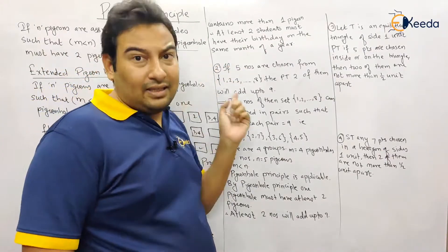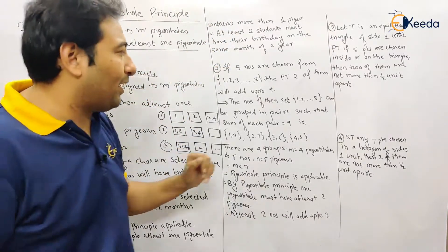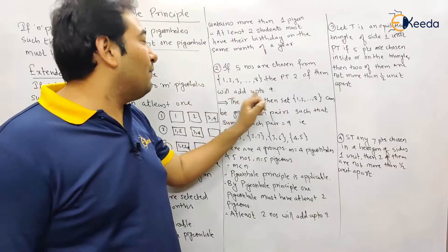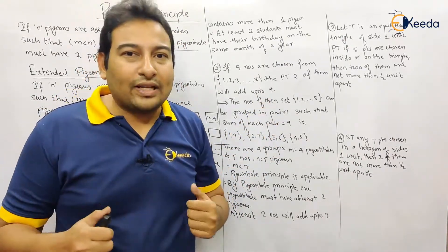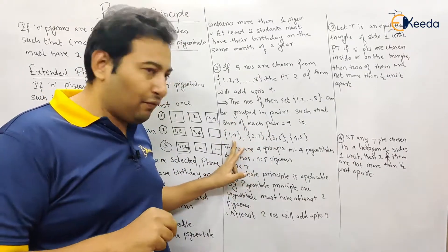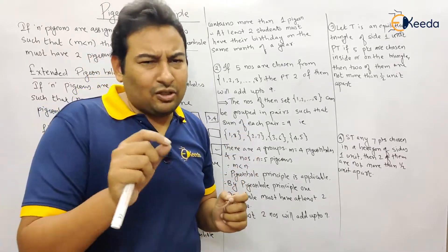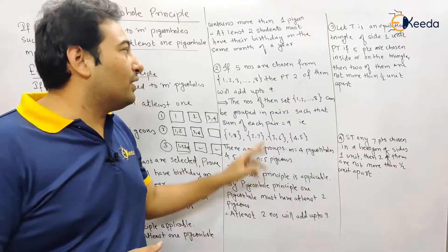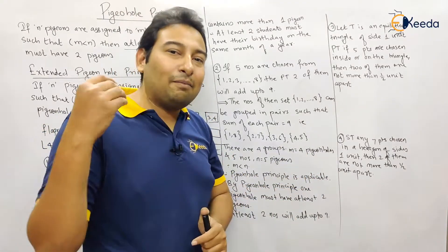This next problem is very important and asked frequently in exams. If five numbers are chosen from one to eight, prove that two of them will add up to nine. Between 1 and 8, the pairs that add up to nine are: {1,8}, {2,7}, {3,6}, {4,5}. These are the four pairs. Five numbers are chosen — n = 5 pigeons. Four pairs/sets — m = 4 pigeonholes. m < n, so Pigeonhole Principle is applicable.